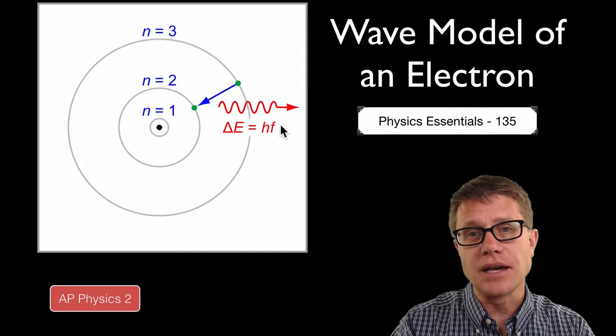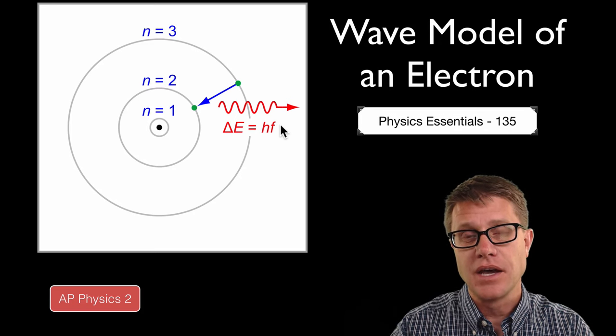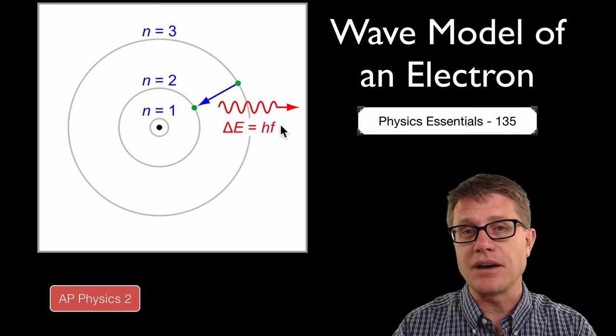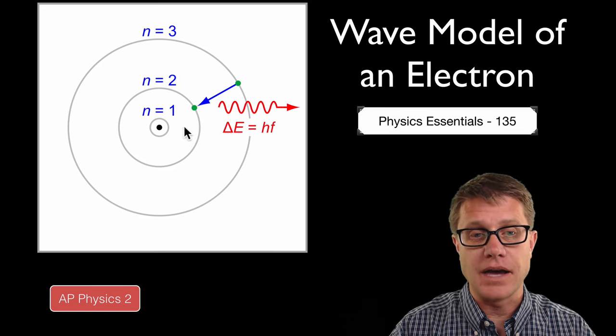Remember as we look at the level of an electron we see that they do not behave like particles but act more like waves. And it was this wave model that allowed us to really understand what was going on at this classical level of a Bohr atom.